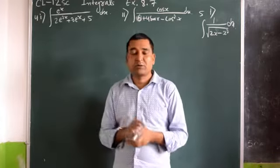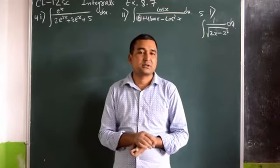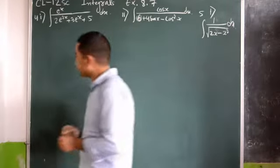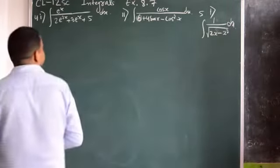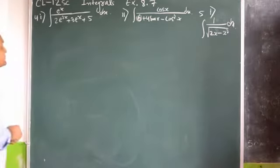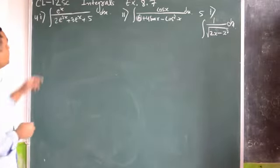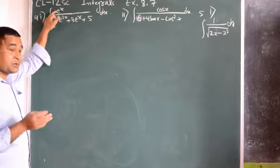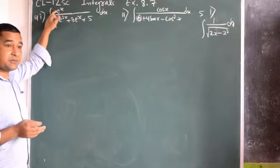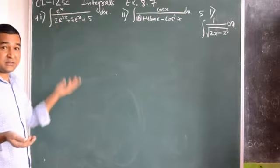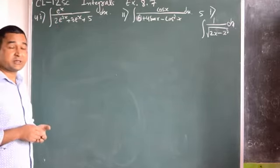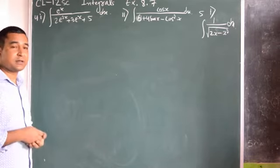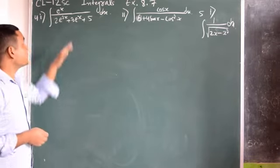Now, the same thing I am going to explain by solving all these three sums. Let me start. There is an e^x at the numerator. The differentiation of e^x is e^x, which means we can substitute e^x.